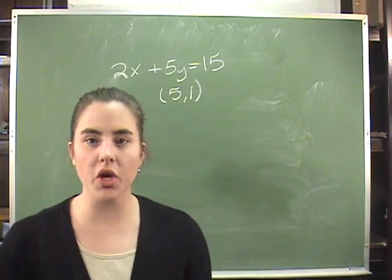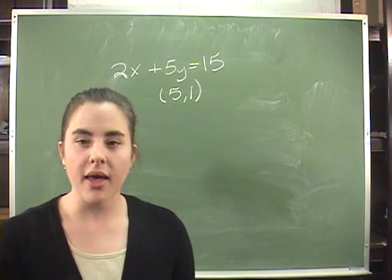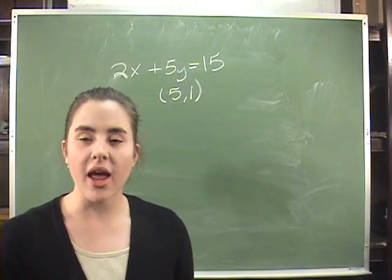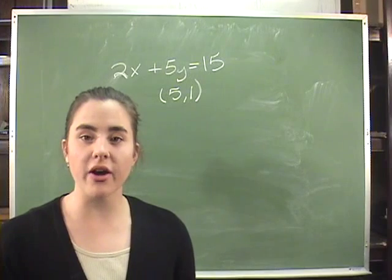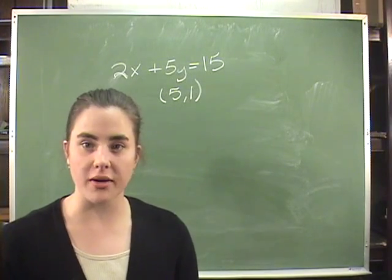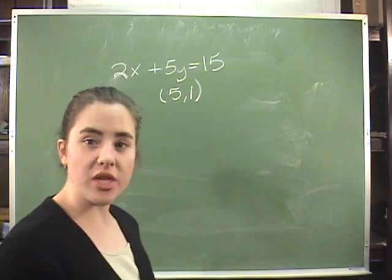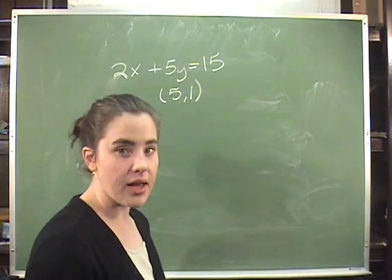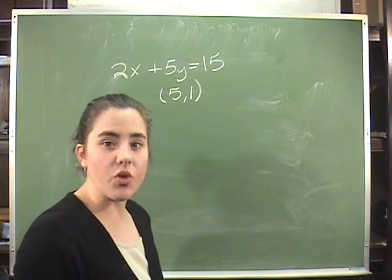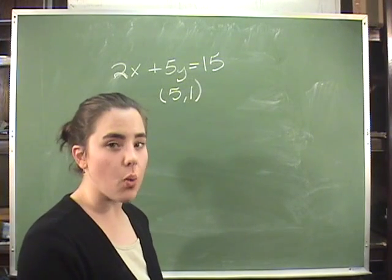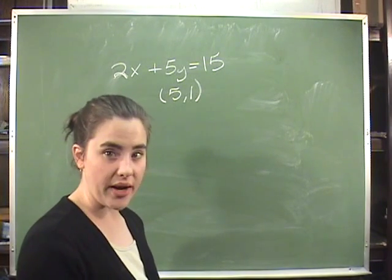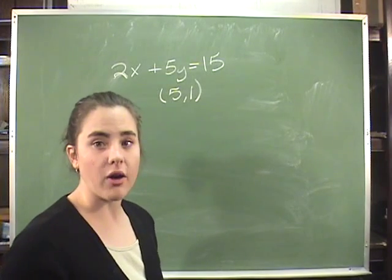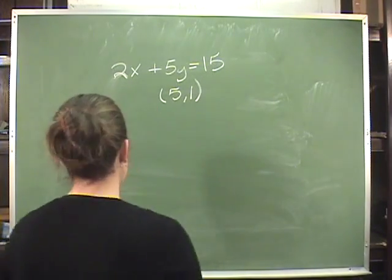Some of your homework problems will give you an equation like the one you see on the board. Then it will give you a coordinate pair and ask you, is this pair of numbers a solution to this equation? The way you figure it out is you take the x value first and plug it in wherever you see an x in the equation. Then solve for y. If the y you get for an answer equals the y you're given in the coordinate point, then the ordered pair functions as a solution.